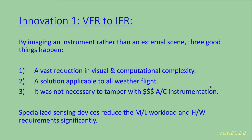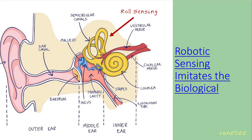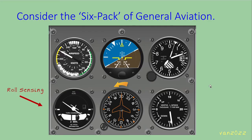And so emerges the general principle that specialized sensing devices reduce the ML workload and hardware requirements. Robotic sensing imitates the biological — we could sense with our vision, but this would create a large and distracting cognitive overload. Instead, we determine our geometric attitude with a specialized sensor, which in humans are called the semicircular canals, one for each axis of roll, pitch, and yaw. We were made to fly. Consider the standard six-pack of general aviation — the CNN sensing techniques described here are applicable to all these standard instruments.